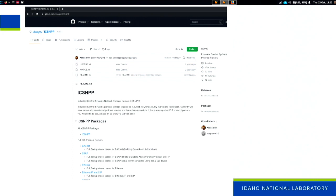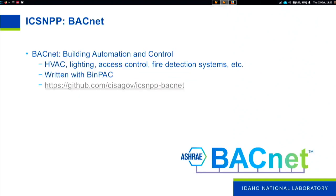So far we've got eight full protocol parsers in the ICSNPP project, and two other packages that extend logging capabilities for some of Zeek's existing parsers. I'll run through the ones we have so far. BACnet — the BAC stands for Building Automation and Control — is the communication standard for things like heating, ventilation, air conditioning, lighting control, access control, and fire suppression systems. This was one of the first ones we put out, released January 2021, written in binpac, and still in active development. Keith Jones has been using it and opened some PRs for us.